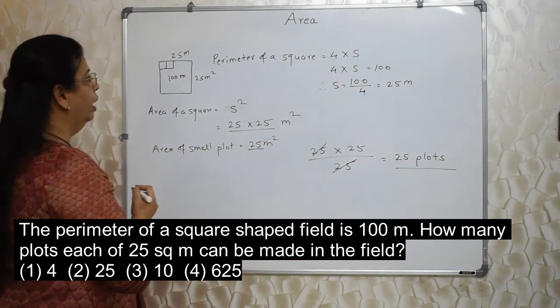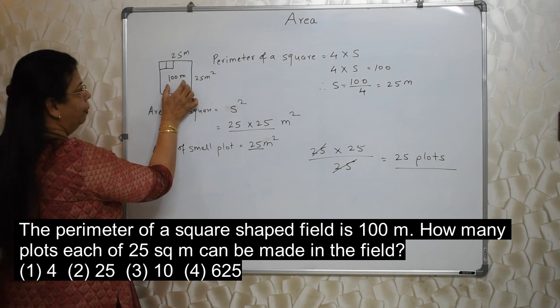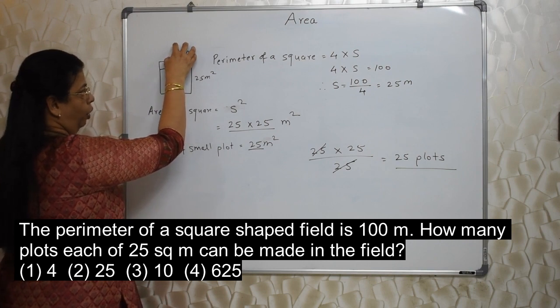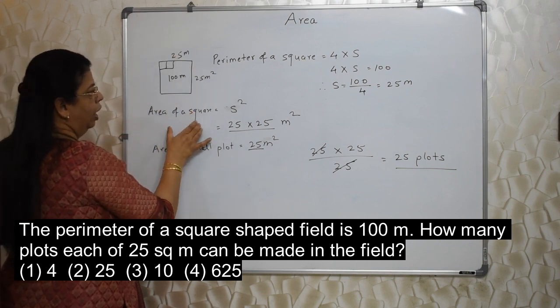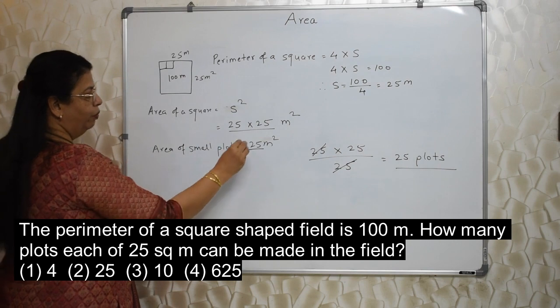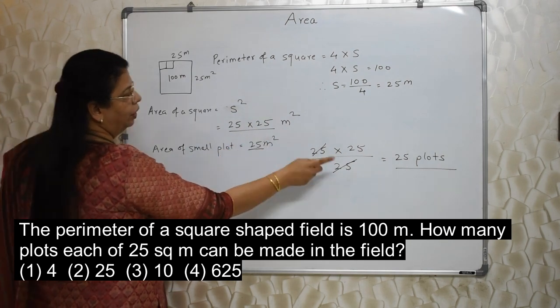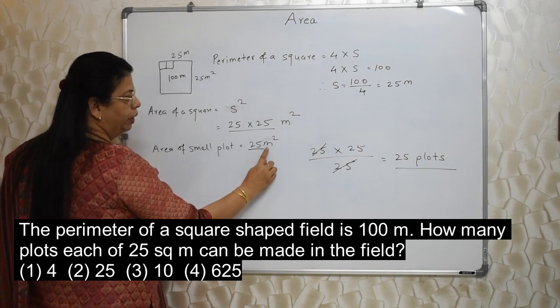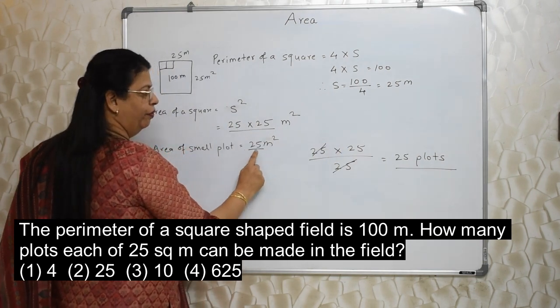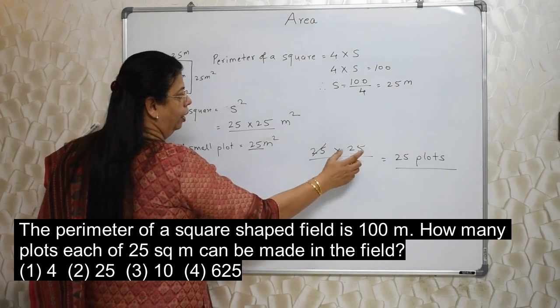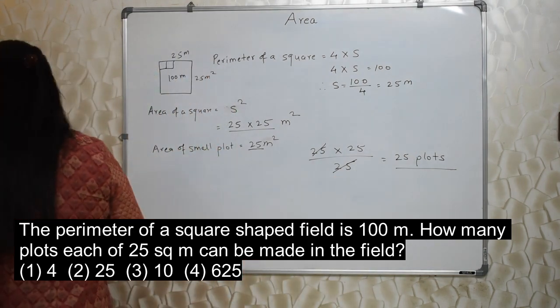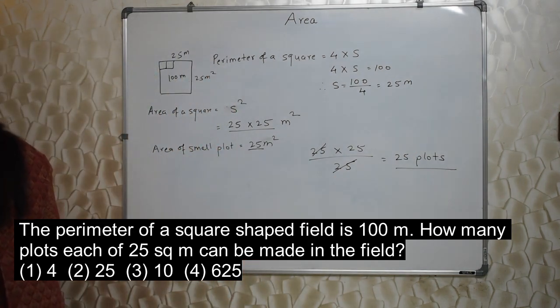See students, again what I have done? I have found out from the perimeter given, the side of this square plot. Once I got this side of the same plot, I have used the formula of area of square and found out the area of that particular plot. This is a bigger plot, which I want to divide into small small 25 meter, 25 meter square small plots. So I have done the division. This was also meter square, this was also meter square. So I have not written anything meter square here. Just written the number 25 to 25 upon 25. All are 25. You don't get confused. This is the area of the bigger plot. This is the area of small small plots. I have done the division. 25 plots is the answer. So easy. Very, very easy.